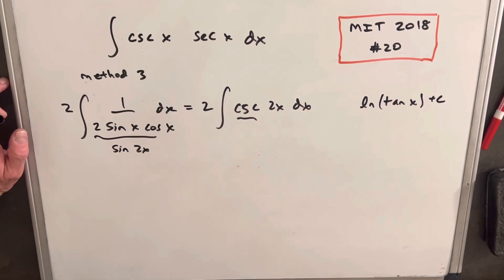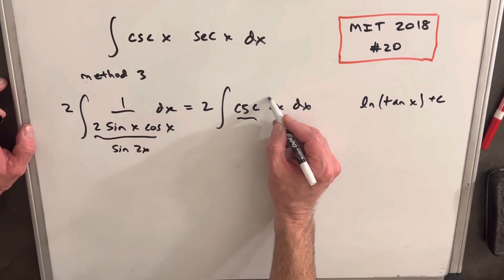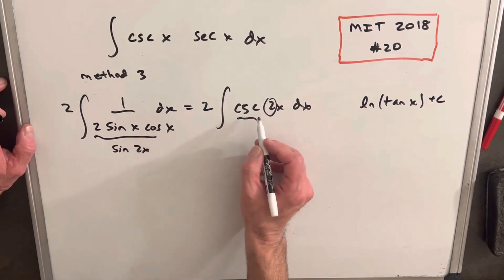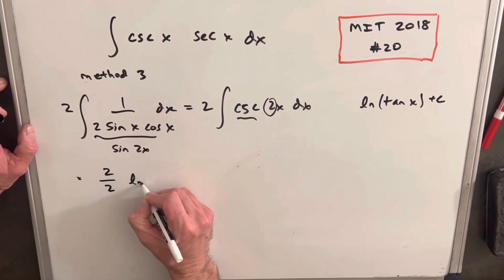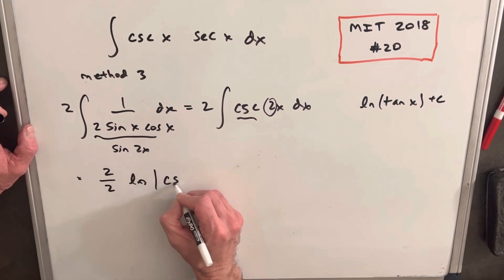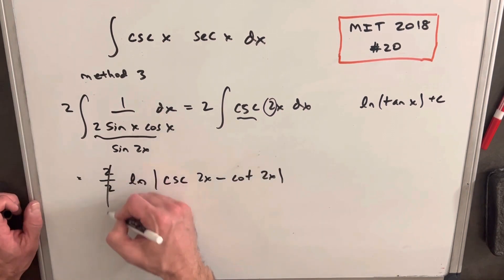The integral of cosecant is natural log cosecant minus cotangent. So we do that. We need to notice, though, we have a 2 on here. So we'll bring a 2 out front. So what's going to happen is we're going to have our 2. Then we need to divide by a 2. And for our integral of cosecant, well, ln, cosecant 2x minus cotangent 2x. 2 over 2 is 1.